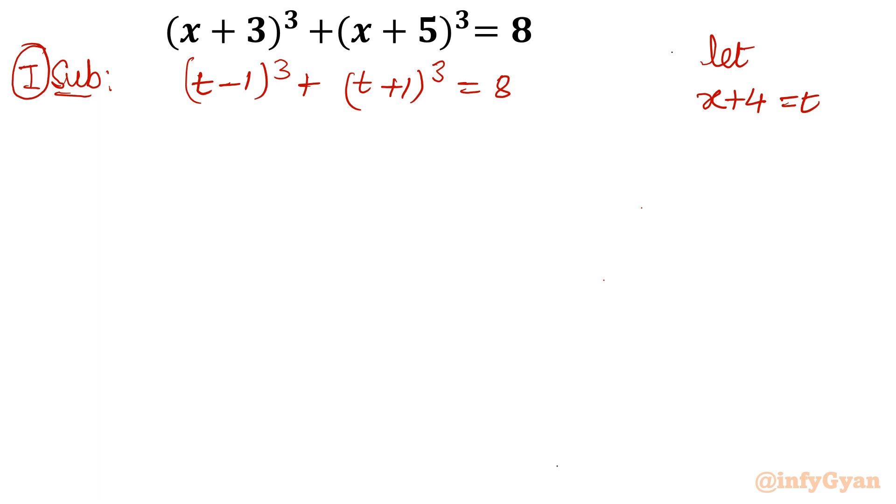Now I will use the identity a minus b whole cube, it is equal to a cube minus b cube minus 3ab times a minus b. So equation will convert: a cube minus 1 minus 3t square plus 3t.